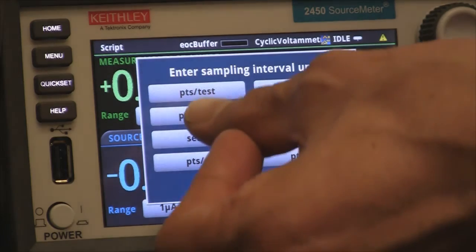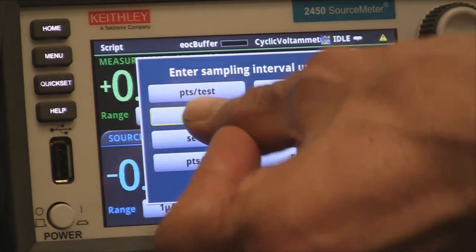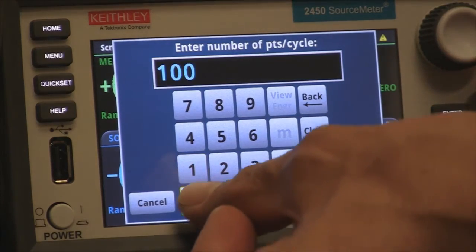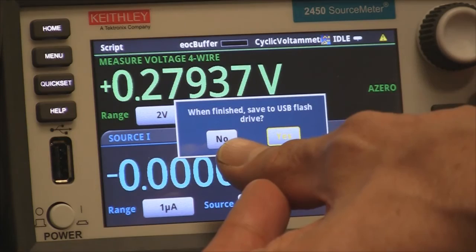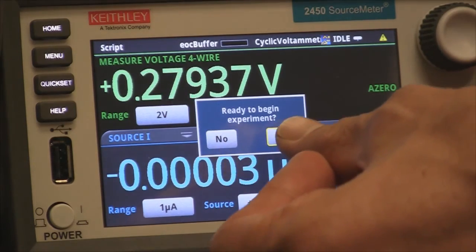The sampling interval units - we're going to select a number of points per cycle, and I'm going to select a thousand points per cycle. Am I going to save the data to the USB stick? I'm not today. And I begin the experiment.